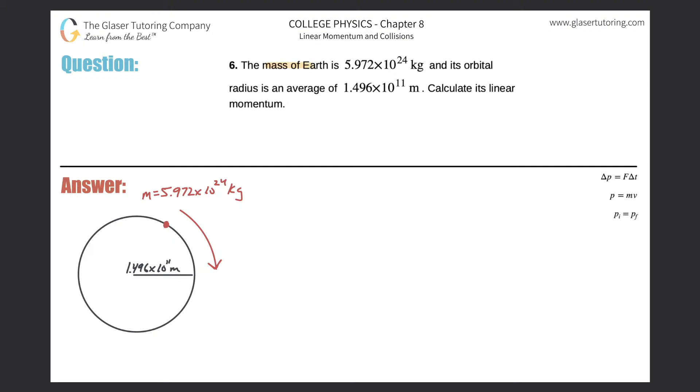Number six: The mass of the earth is 5.972 times 10 to the 24 kilograms and its orbital radius is an average of 1.496 times 10 to the 11 meters. Calculate its linear momentum. All right, so first let's start with the question.